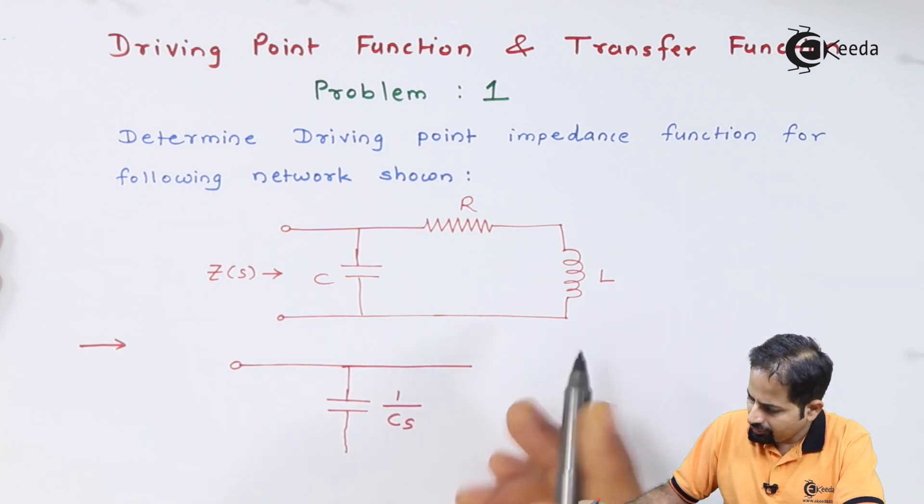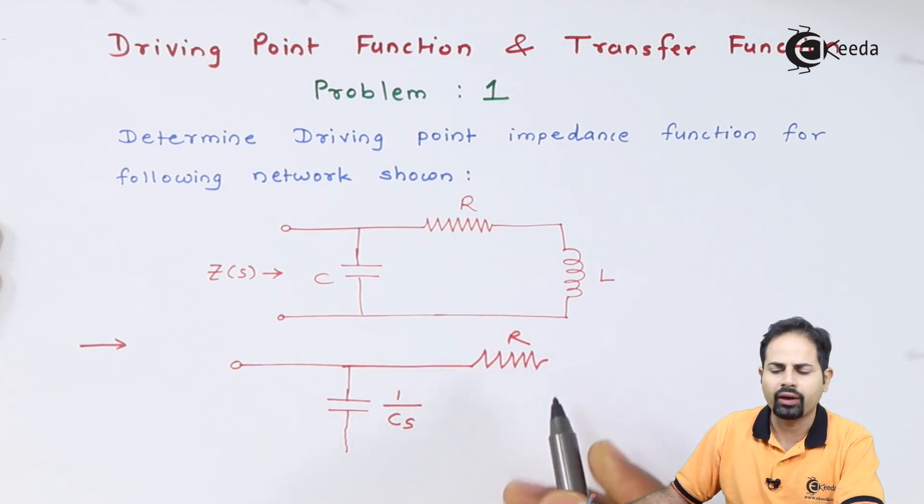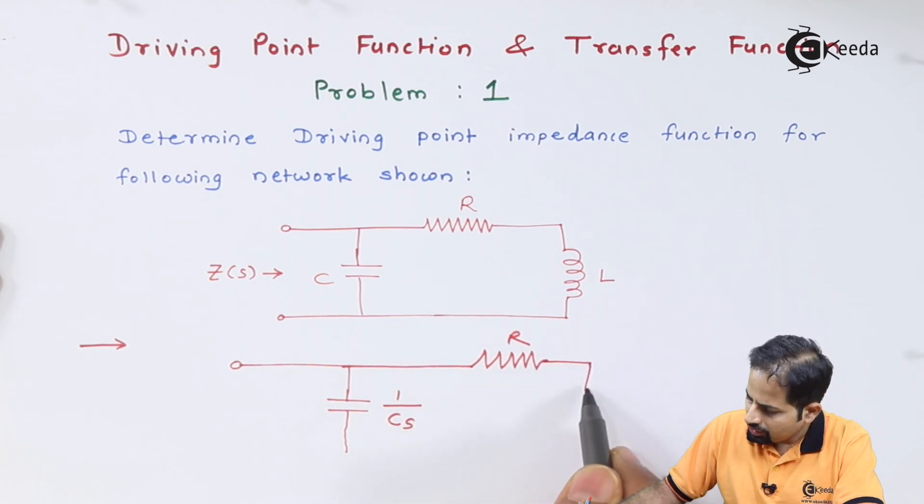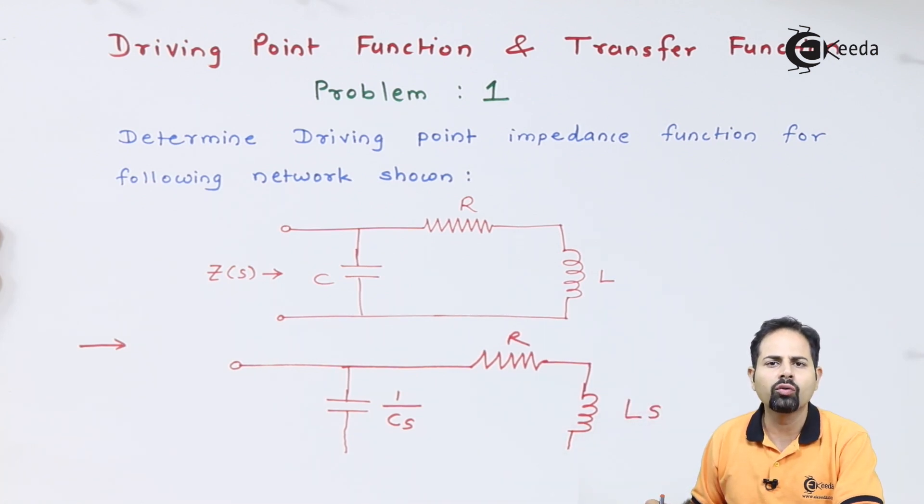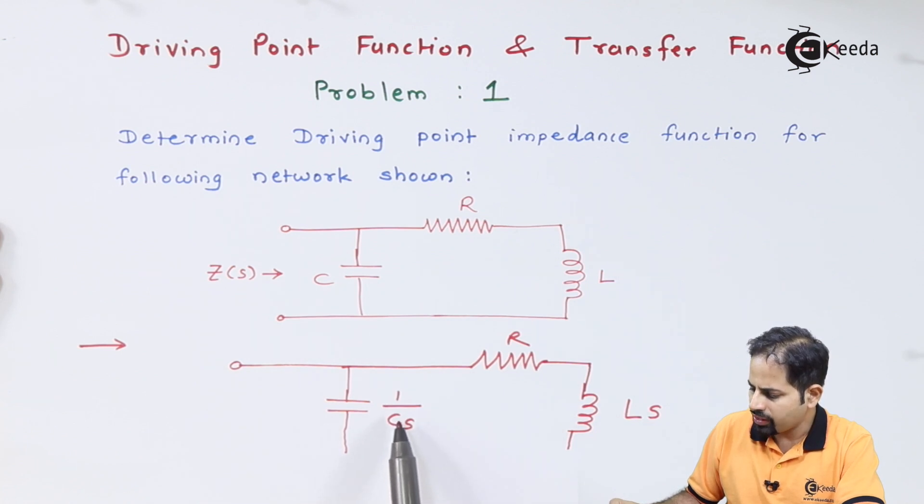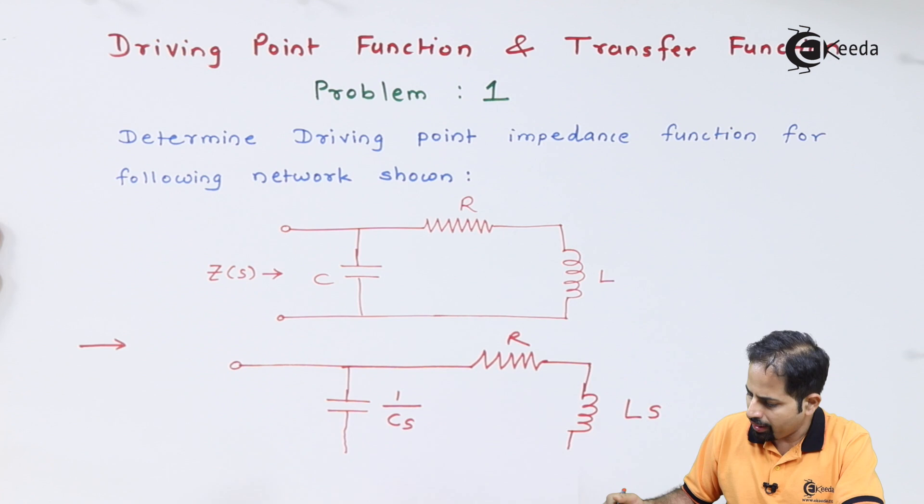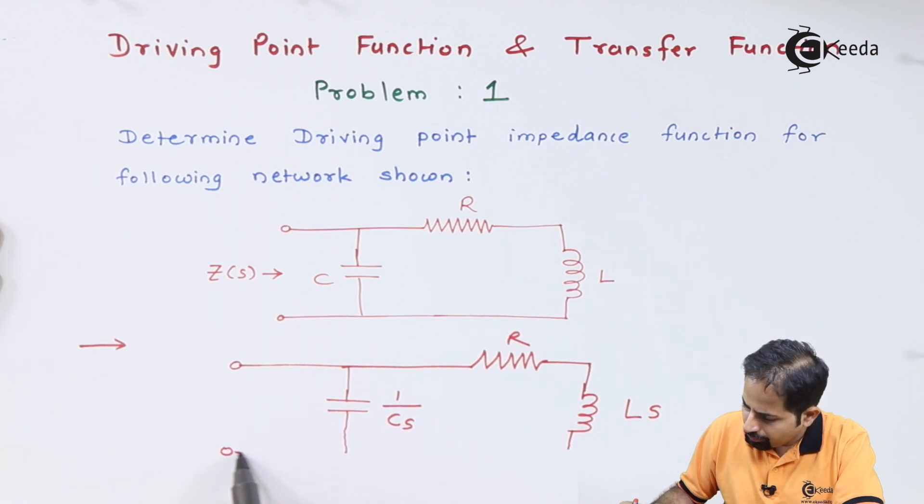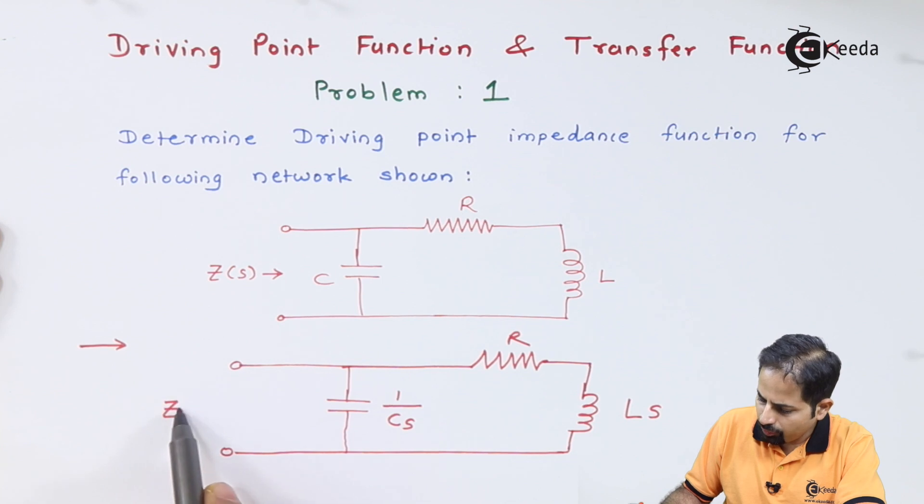This resistor is unaffected so it will be R, and this inductor will be L multiplied by s. So now onwards always capacitor impedance will be 1 upon Cs, for inductor it will be L multiplied by s, and we complete the circuit. And here nothing but going to be Z(s) which we have to calculate.